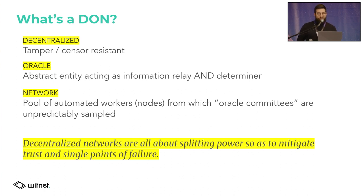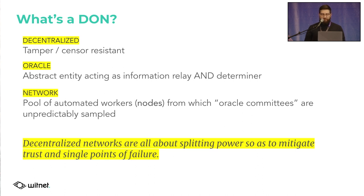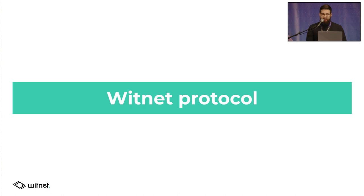What is a decentralized Oracle network? When we talk about decentralized Oracle networks, we say they are decentralized because they provide tamper and censorship resistance. There's an Oracle, which is an entity that can relay information and provides determination of the data. And then there is a network, because there are a bunch of nodes that can be randomly selected to resolve data requests and act as a committee — an Oracle committee. Decentralized Oracle networks are all about splitting the power to mitigate trust and avoid a single point of failure.